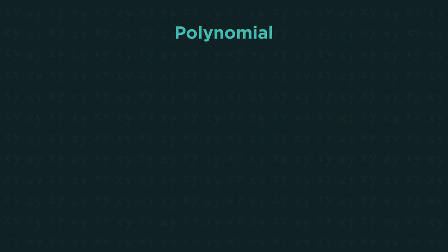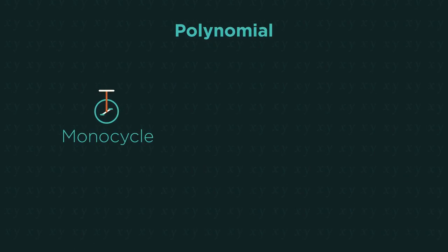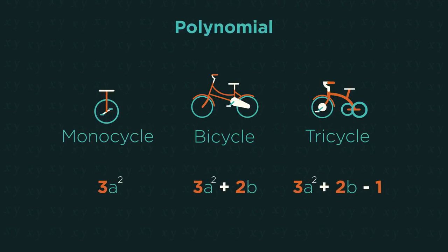Polynomial is a general name we can divide down into monomials, binomials, trinomials, and many others. Given that a monocycle has one wheel, a bicycle has two wheels, and a tricycle has three wheels, do you think you know the difference between a monomial, binomial, and trinomial?